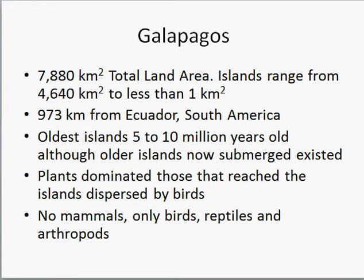The Galapagos has a total land area of about 7,880 square kilometers, which is pretty small. It's a set of different islands ranging in size from about the size of Trinidad — 4,600 square kilometers — to less than one square kilometer. The range in sizes is mainly due to the fact that the Galapagos is of volcanic origin, and the older islands tend to get eroded away over time.